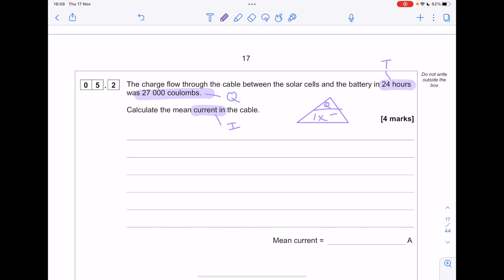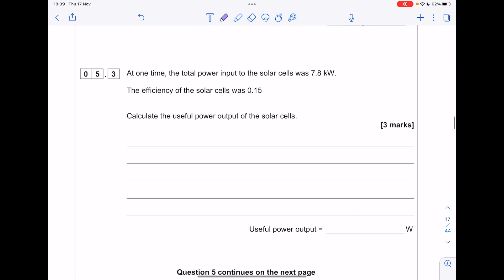So we have time, we have charge, we have current. Q, I, T. So we need I, which is Q divided by T. Q was 27,000 coulombs. T is 24 hours. But be careful, that needs converting into seconds by timesing by 60 twice. Always be careful with your units. Show all your working. You'll get a final value of 0.313 to three significant figures.